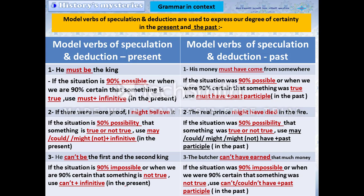Number 2: 'If there were more proof, I might believe it.' If there is a 50% possibility that something is true or not true, use may, could, or might plus infinitive in the present. In the past: 'The real prince must have died in the fire.' If there was a 50% possibility that something was true or not, use may, could, might, or might not plus have plus past participle.